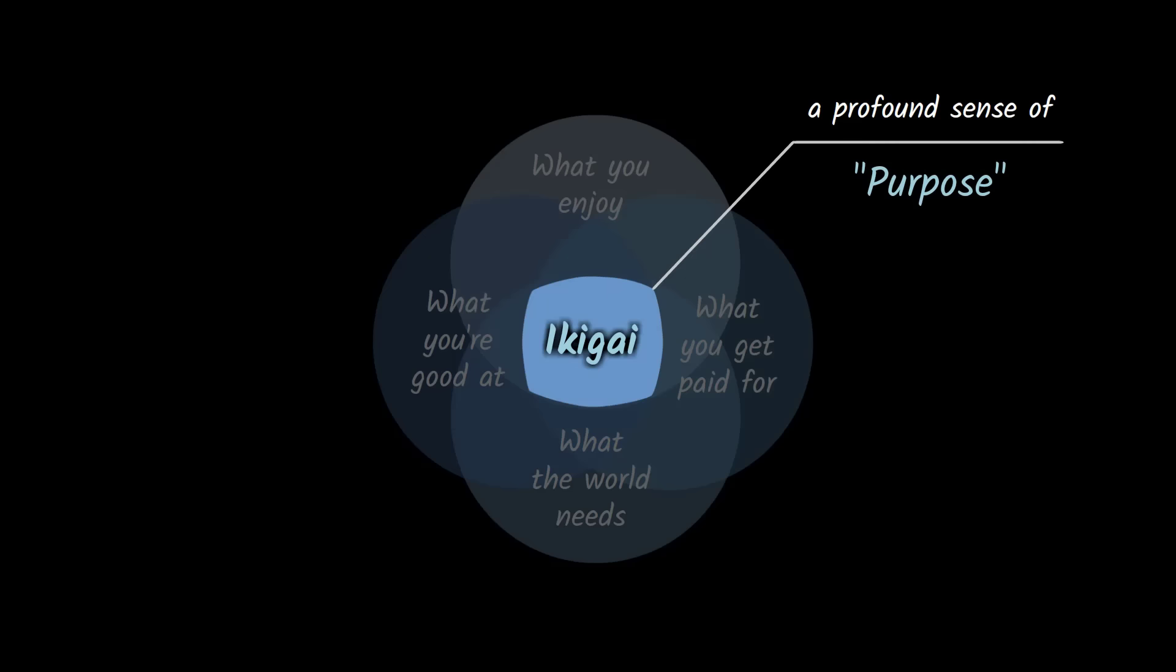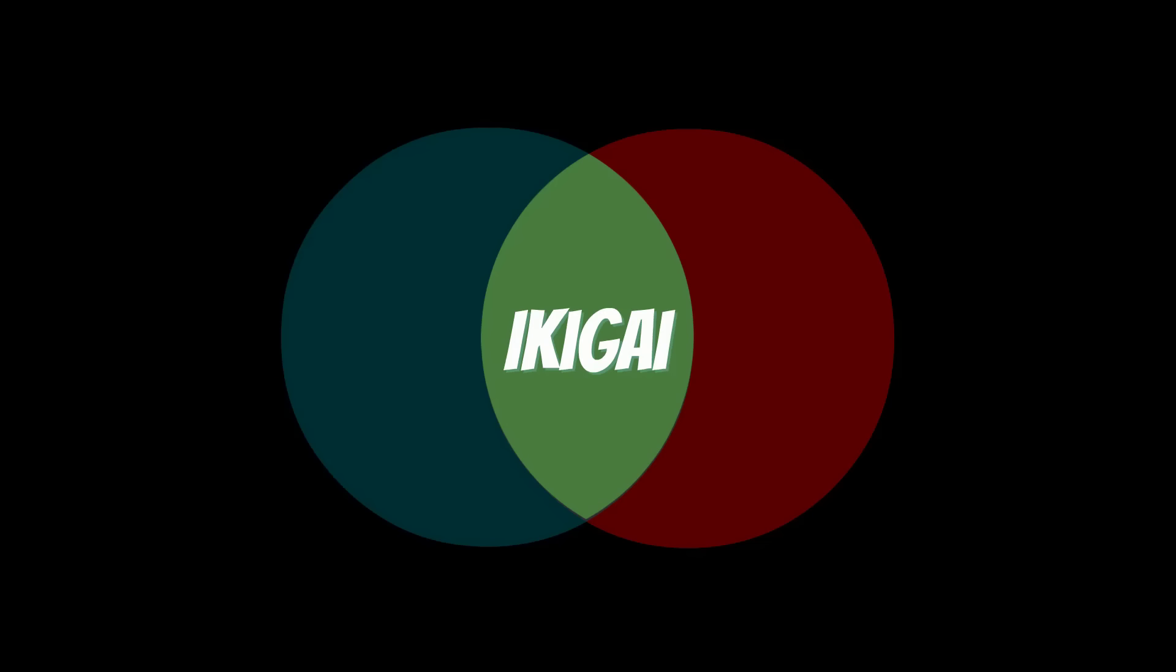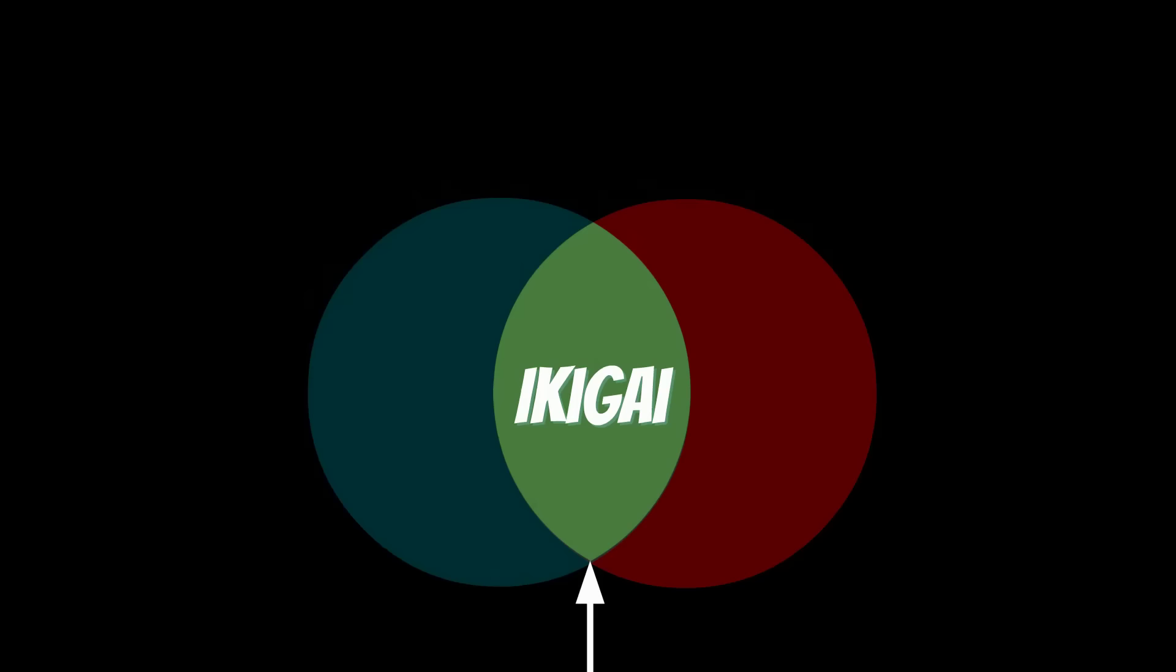But after reading the book Ikigai, I think the model needs to be revised. Because getting paid isn't necessary for purpose in your 80s, and focusing on what the world needs is too vague and intimidating. Therefore, I've simplified the model and reduced the four circles to two, so you and I can more easily find our ikigai throughout our lives. If we get busy working at the intersection of these two circles, we will live each day with a profound sense of purpose.